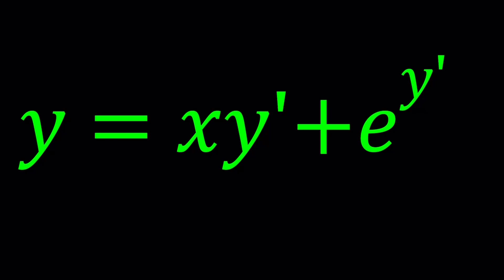y equals xy prime plus e to the power y prime. Now, we have basically x multiplied by the first derivative of y plus a function of y prime. And that equals y. So we're going to differentiate both sides first. Let's do it.